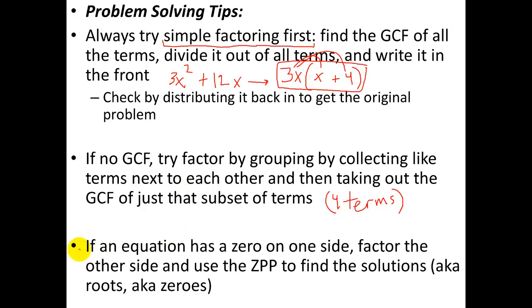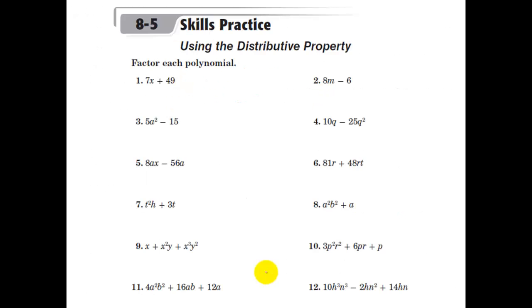Last thing related to the zero product property, ZPP. If the equation is zero on one side, you should factor the other side and then use the ZPP to find the solutions, just as I showed you on the previous slide. Let's take a look at some examples.